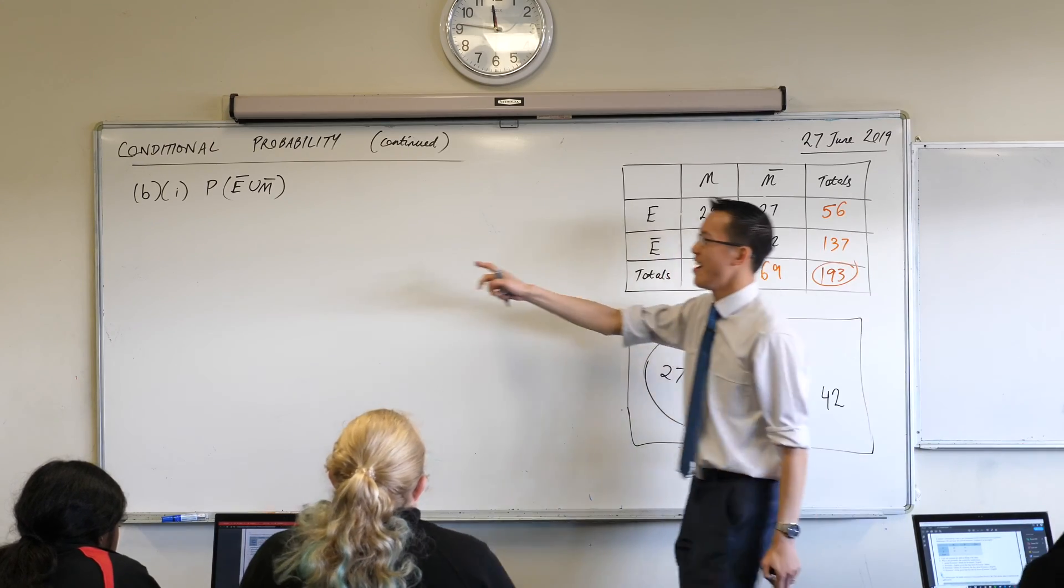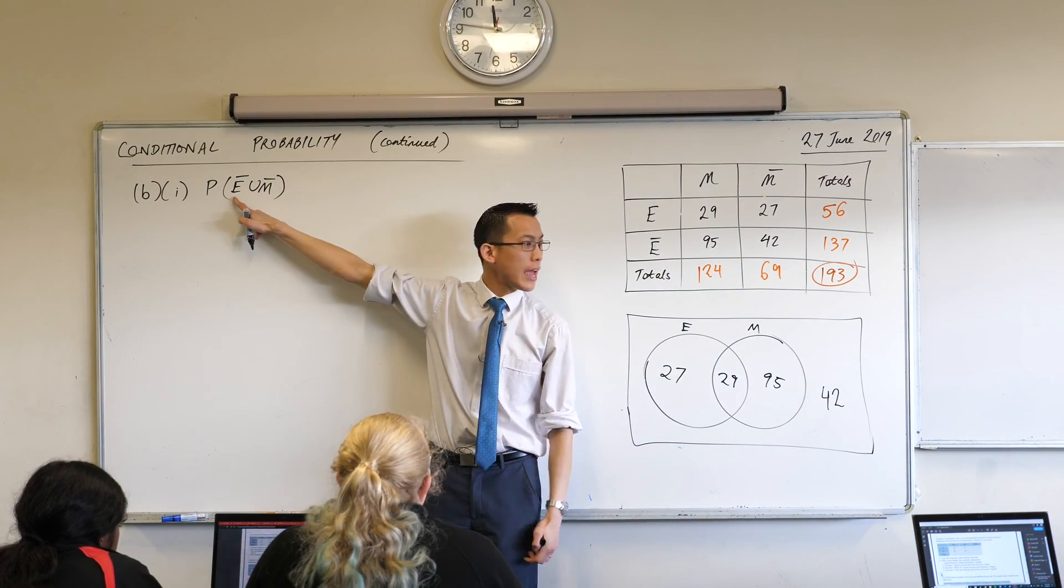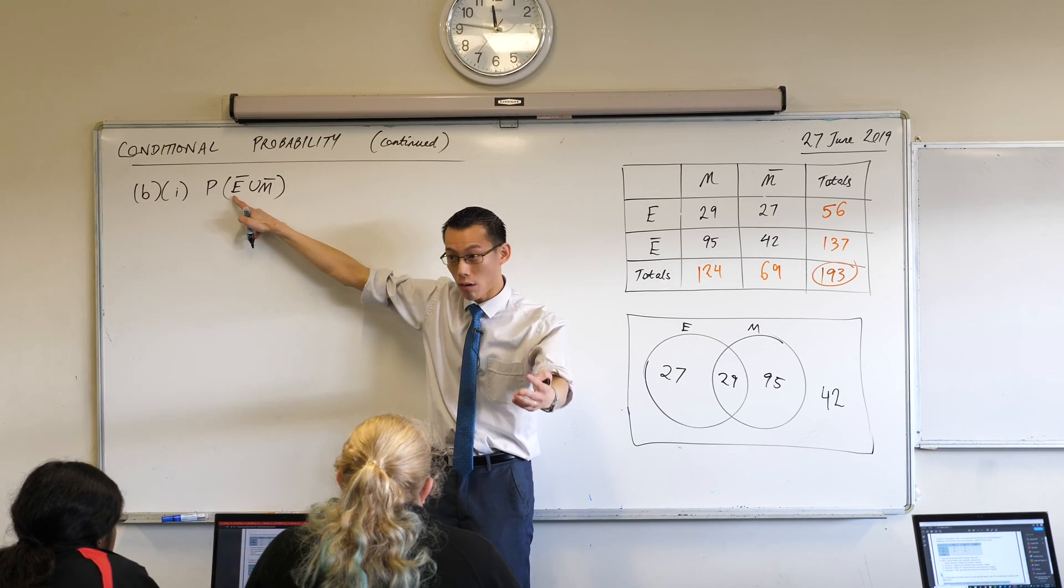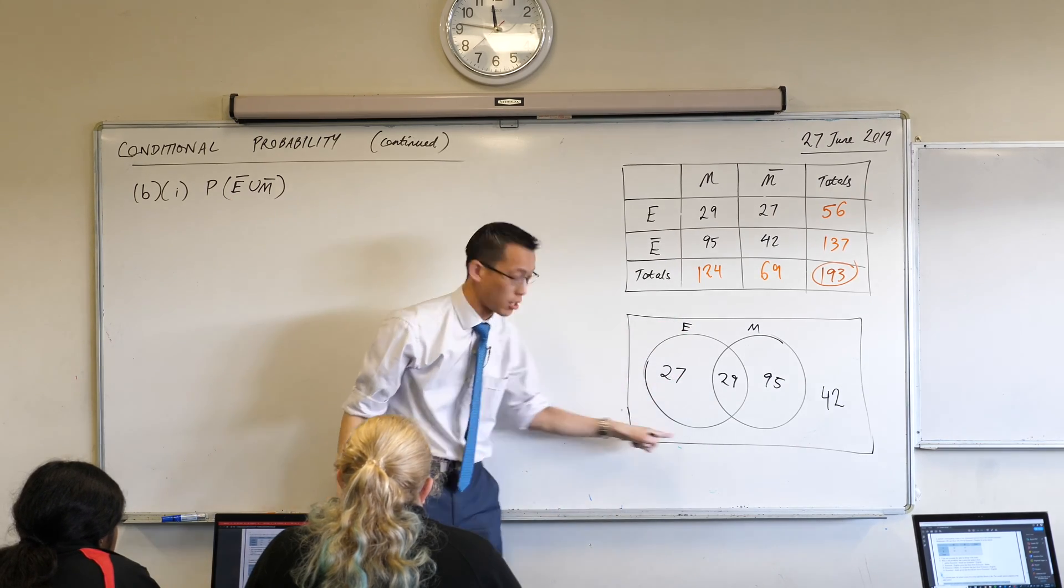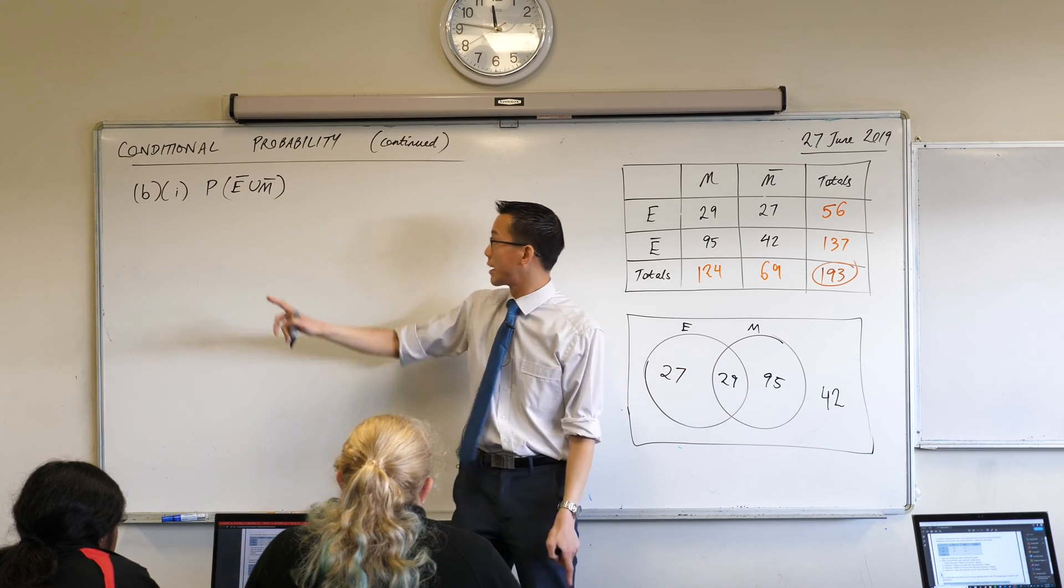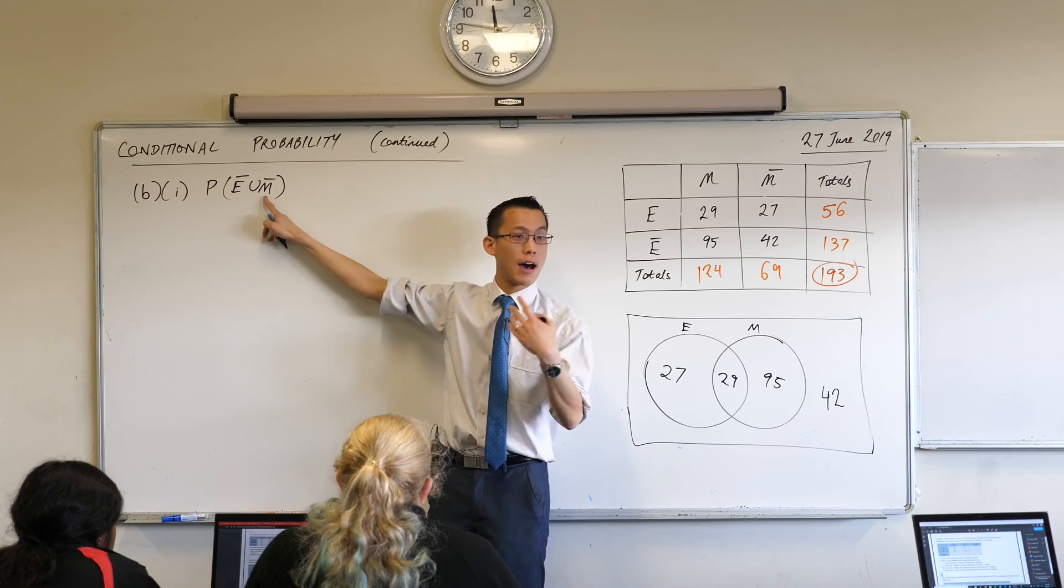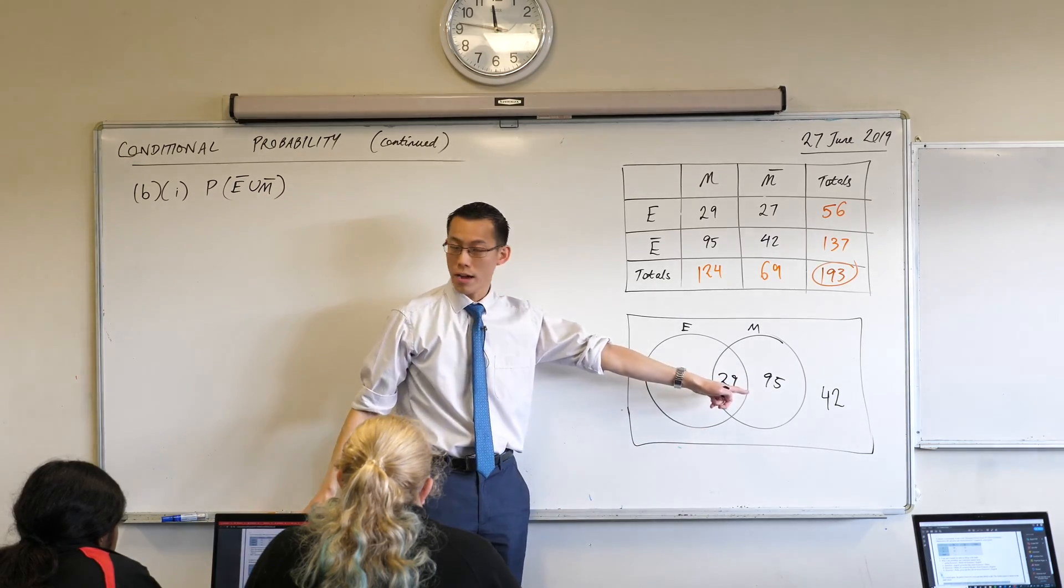I want to consider, this is the important part, right? What is this area, complement of E? It's everyone outside of this circle. Do you agree with that? Okay, so we know where that area is and then this is everyone outside of the M circle, right?